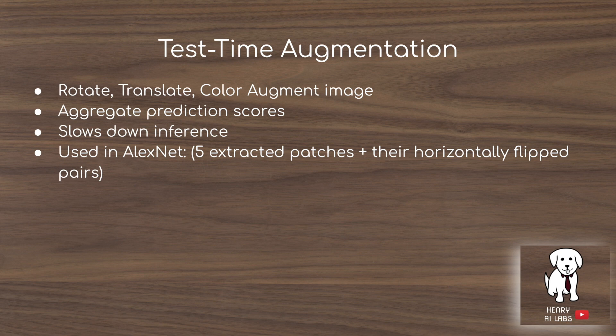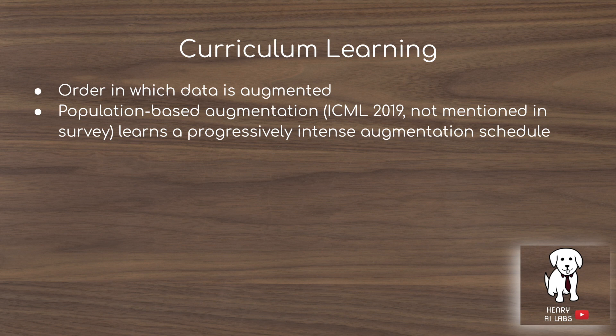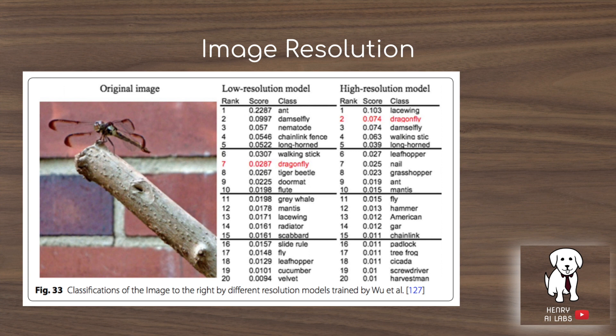Another interesting idea is curriculum learning. In population-based augmentation, presented at ICML 2019, they progressively increase the magnitude parameter of image manipulation. When training first starts, they might rotate images by 10 or minus 10 degrees, and as training progresses the rotations get larger, like 60 or negative 60 degrees.